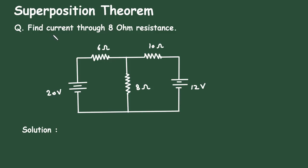To get the notes of electrical circuits, check the link in the comment section and install the app for free. Superposition Theorem. Question: Find the current through the 8 Ohm resistance. In this circuit we have to find the current through this 8 Ohm resistance by using the Superposition Theorem.